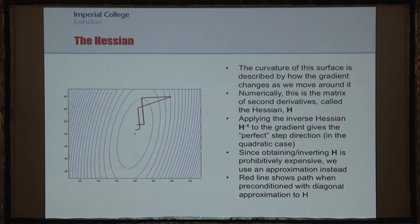Going back to this diagram, what we need to understand to compensate for this is the curvature of these contours, which is described by how the gradient changes as we move around. That, in turn, is the matrix of second derivatives — which is the Hessian. It turns out that to get the perfect step direction in the quadratic case, we need to apply the inverse Hessian to the gradient. But obtaining and inverting the Hessian is prohibitively expensive, so we need to use an approximation instead.